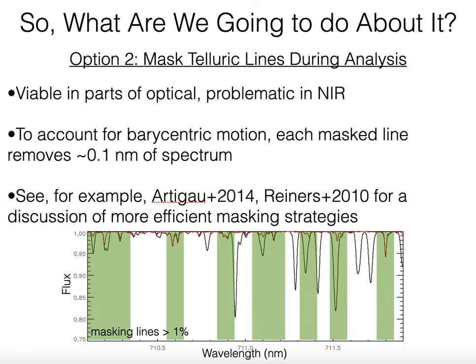The first thing you would try is to mask out the telluric lines during your RV analysis. This is totally reasonable and has been proven highly effective in many situations. It's viable in the optical, but probably problematic in the near-infrared just because there are so many lines. To excise the entire portion of the stellar spectrum impacted by a given telluric line, about 0.1 nanometer of spectrum needs to be masked per line, so you're losing quite a lot of spectrum. As shown in this plot, telluric lines greater than one percent have been masked out, and you can see visually that you're losing a lot of spectrum.